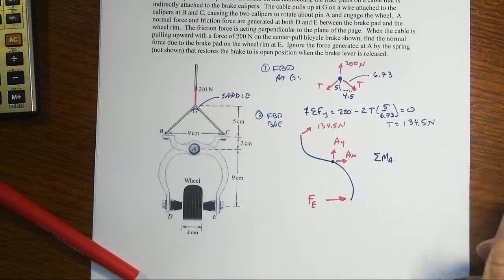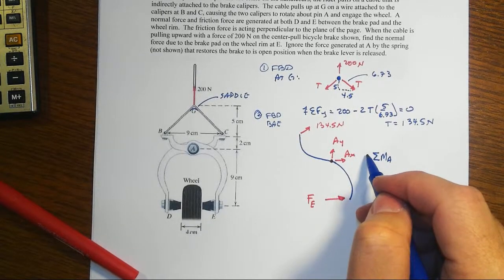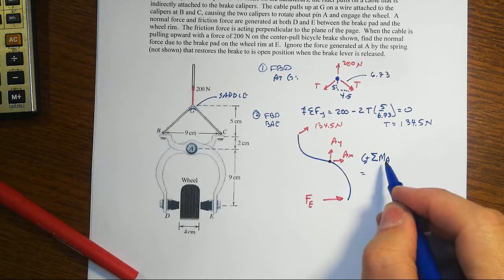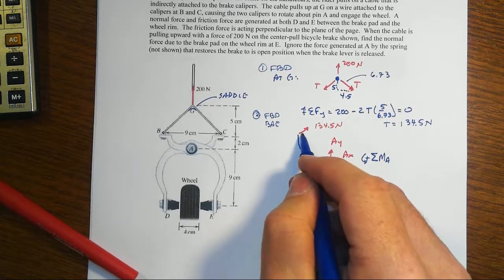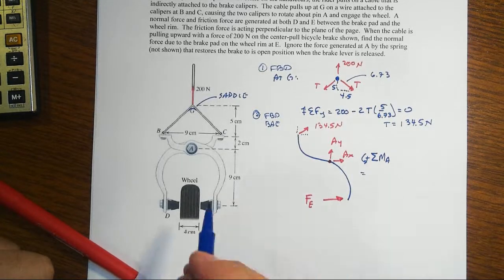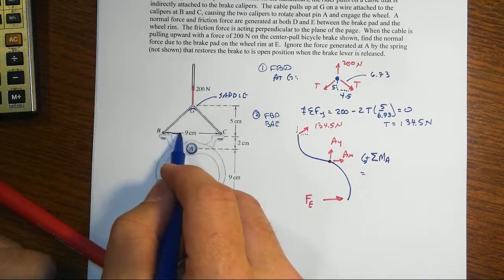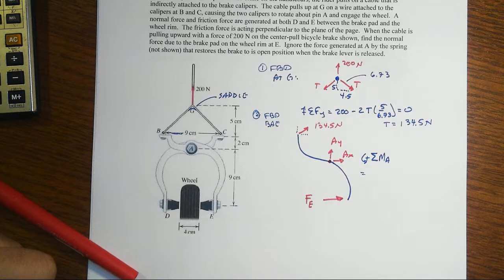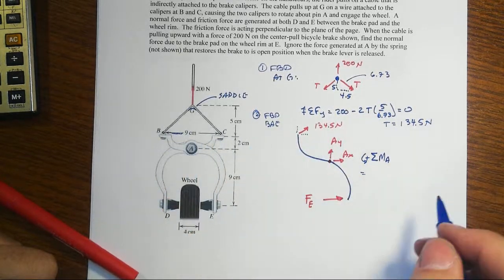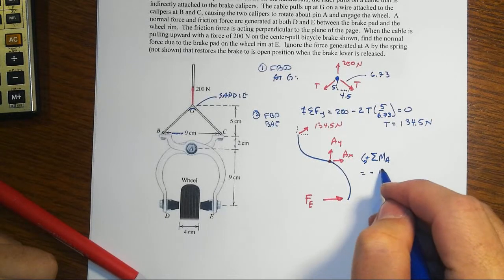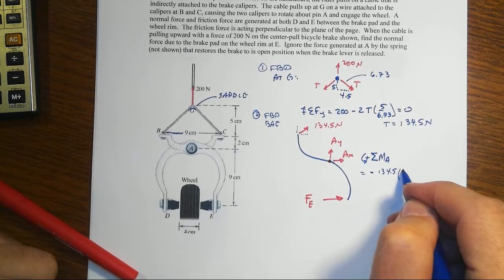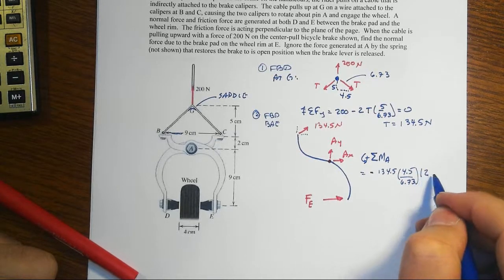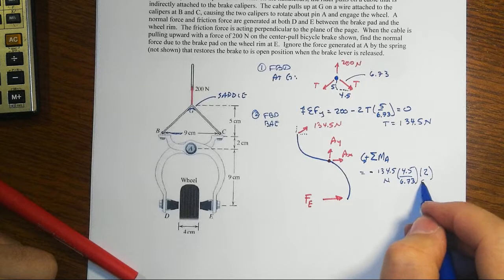So sum of moments about point A. I'm trying to squeeze this all in in a very short space on this document camera, and that's going to make this a little bit ugly here. But as we do this, sum of moments about A, we've got the 134.5. Now, we've got to think about what the dimensions are here. I'm going to probably break this into X and Y components. The Y distance is 2 centimeters. So that would be for the X component of that force going in the negative direction. So 134.5 times 4.5 over our 6.73. That's the X component of the force times 2 centimeters. That's our Y distance.